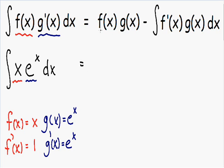So let's start with our f of x. Our f of x is equal to x. So we're going to plug in an x for f of x. Now let's plug in our g of x. Our g of x is equal to e to the x. So we're going to plug in e to the x for g of x.